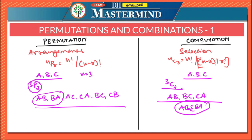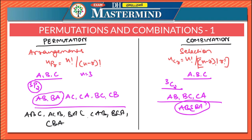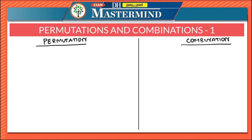All permutations of the letters A, B, C taking all three at a time are: ABC, CAB, ACB, BAC, BCA, and CBA — six arrangements. While the combination that can be formed of three letters A, B, C taking all three at a time is only one: ABC. In other words, the number of all permutations of n things taken all at a time is n!, while the number of all combinations of n things taken all at a time is only 1.